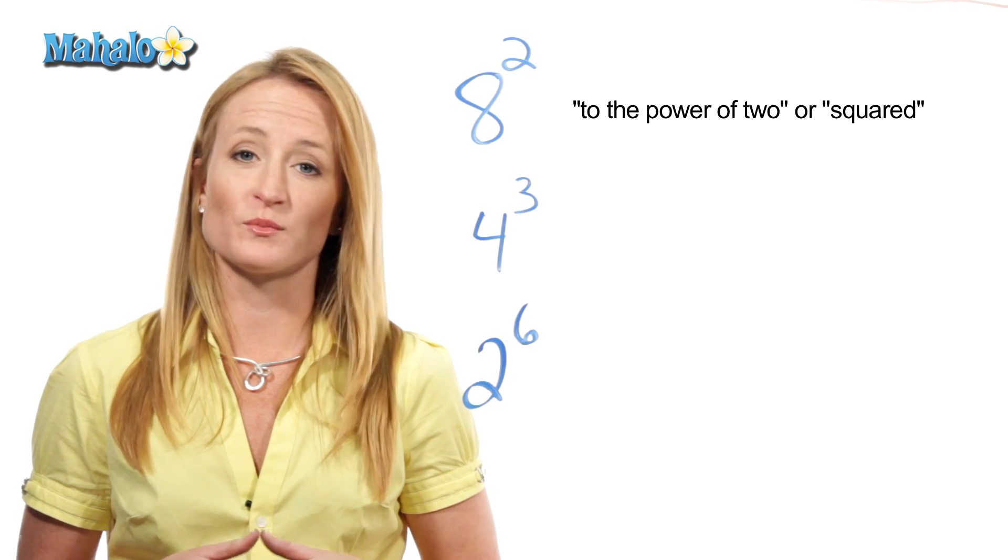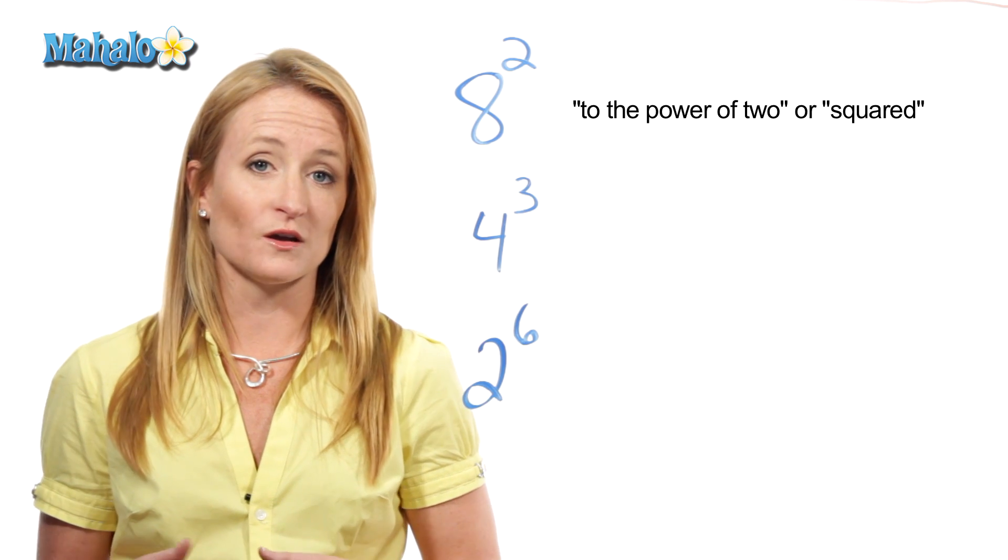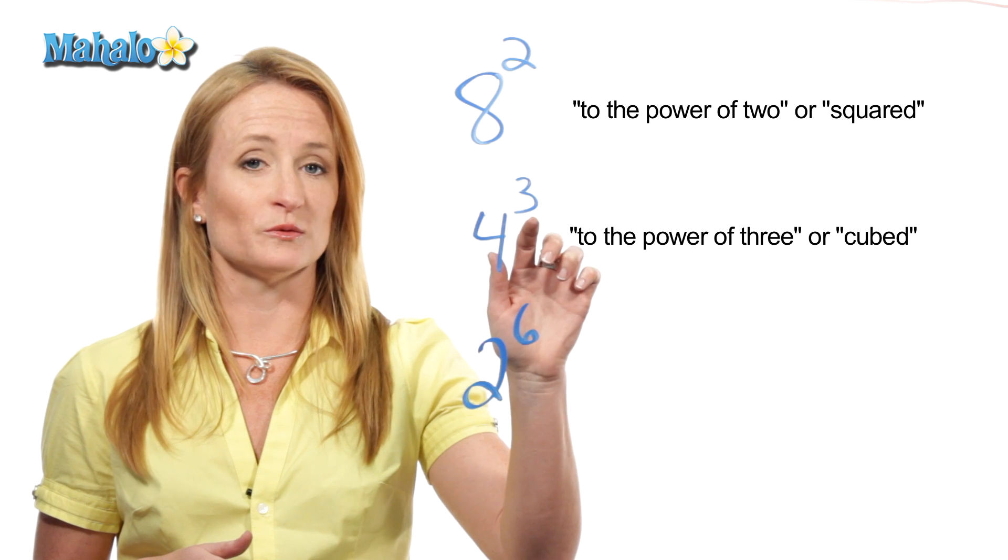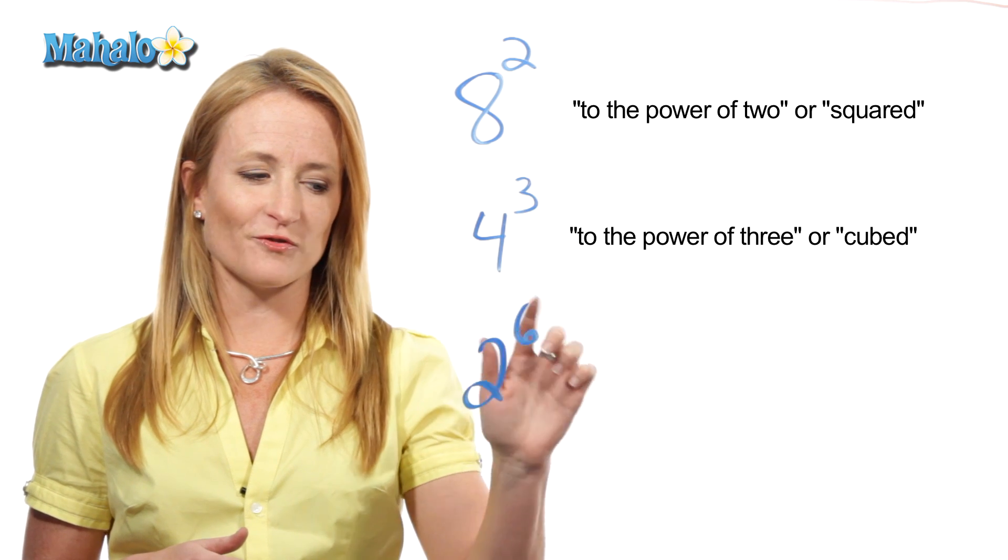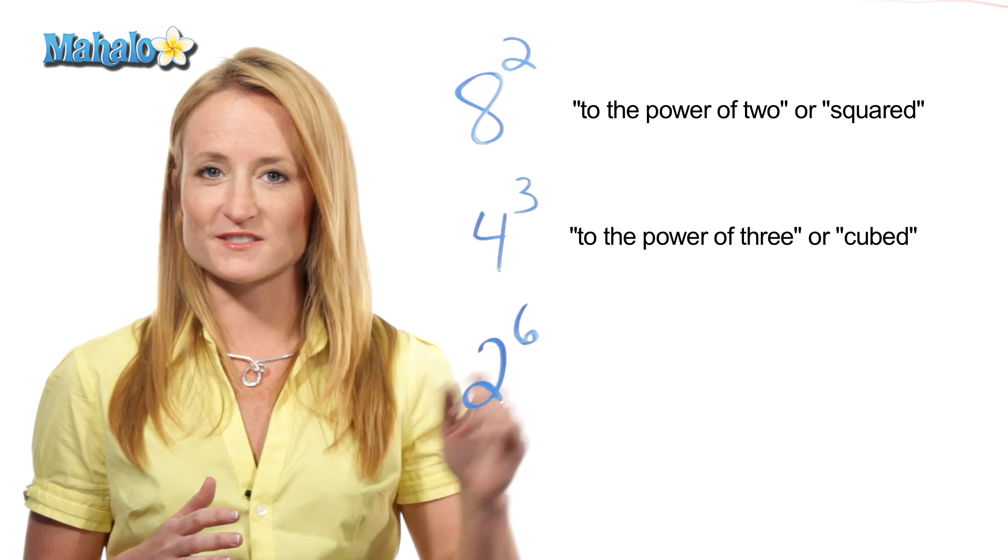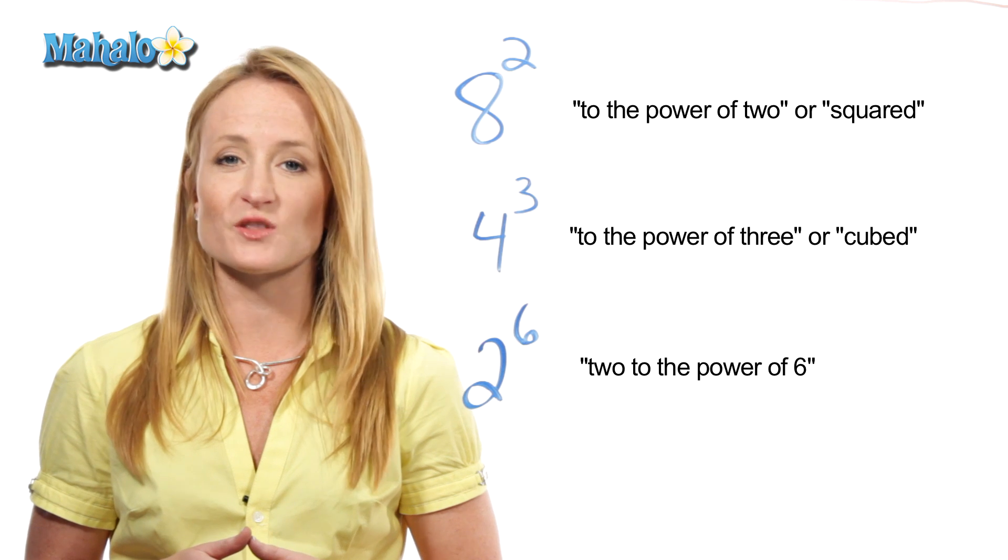This next one can be referred to as 4 to the power of 3 or 4 cubed. And this last one, there's no fancy name for anything to the power of 6. So this one simply would be 2 to the power of 6.